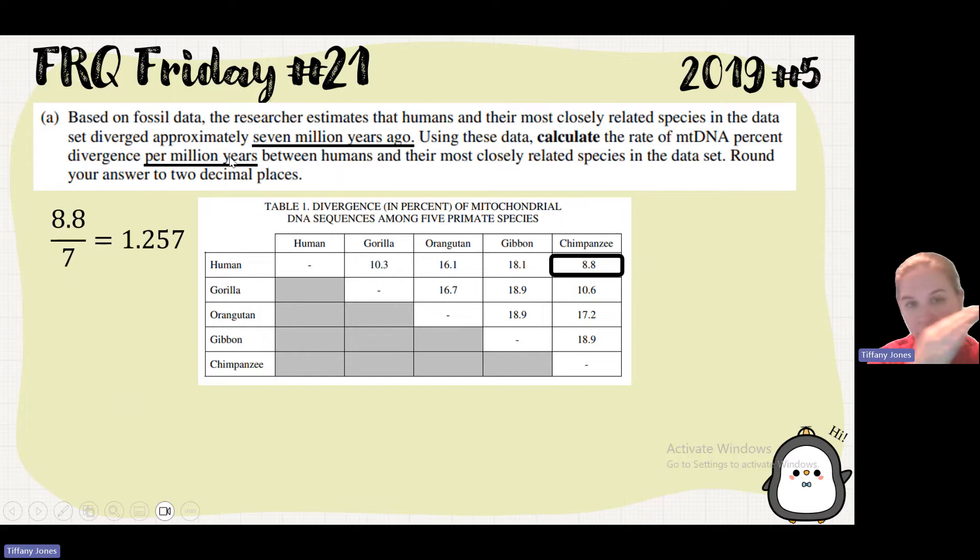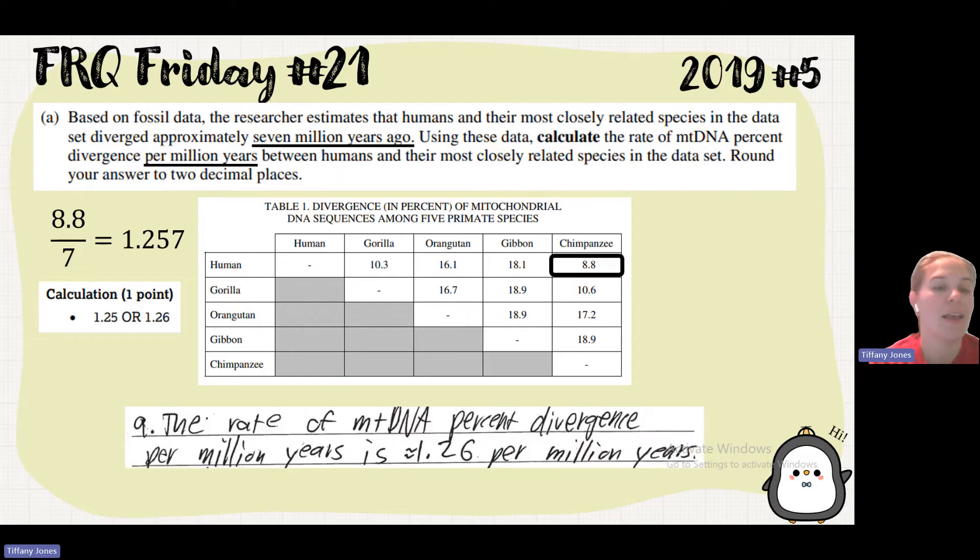So I can ignore all the zeros that would come with that. And that gives me 1.257. But it says to give your answer to two decimal places. So that's 1.25 or 1.26. So the student says the rate of mtDNA percent divergence per million years is approximately 1.26 per million years.